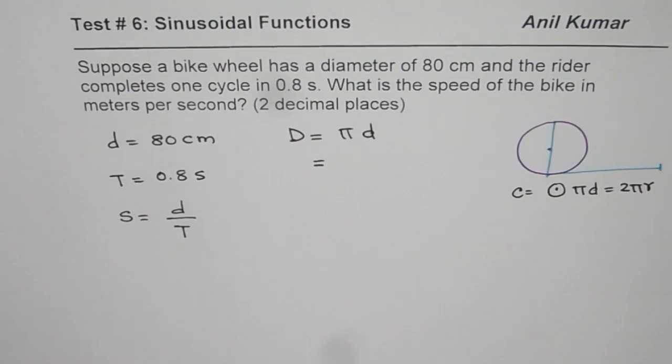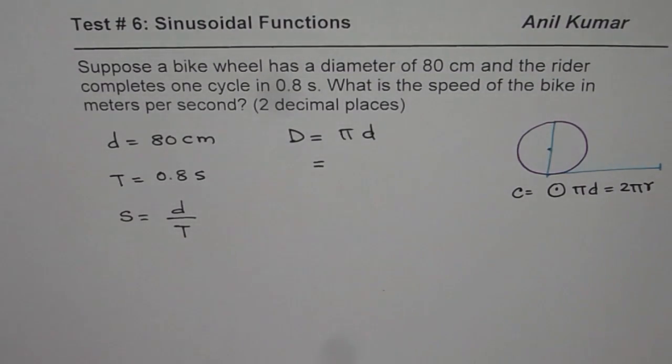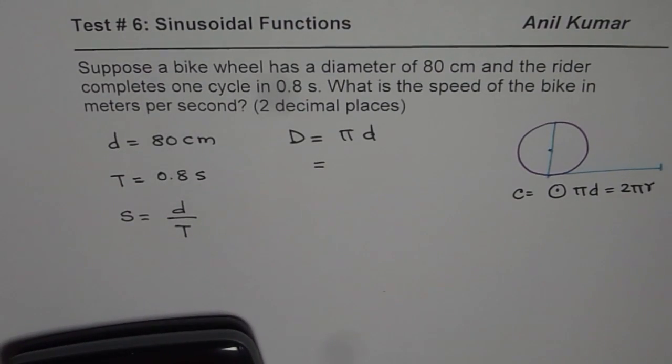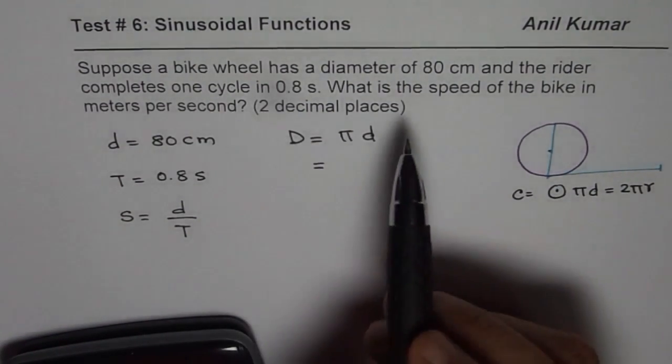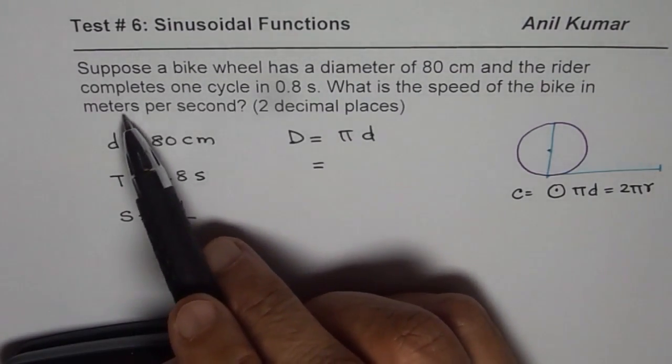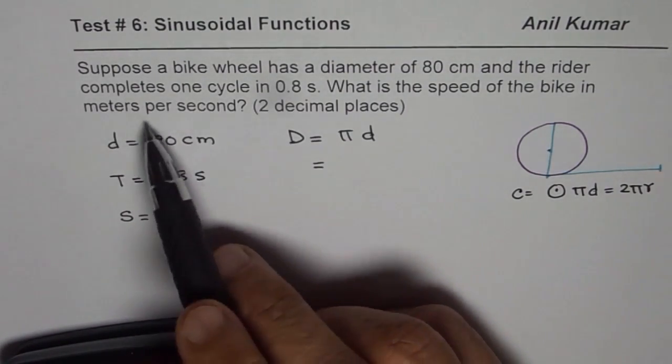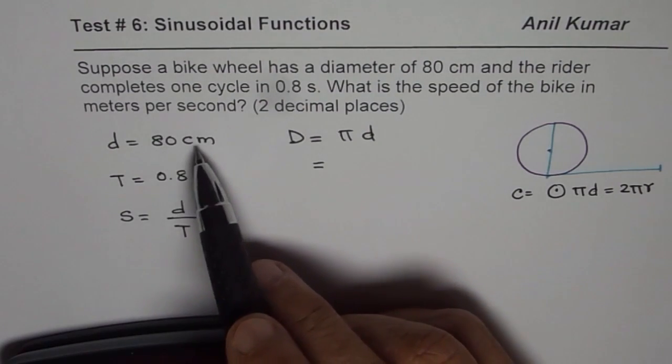In our case, we can use the calculator. Since we need two decimal places, we can use the value of 3.14. One more thing: we need speed in meters per second, so we have to convert centimeters to meters.